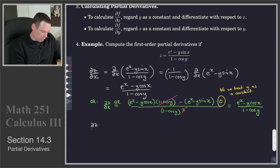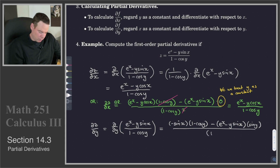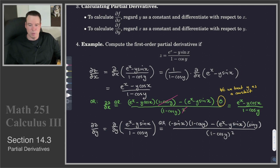For the derivative with respect to y, we use the quotient rule since both top and bottom are functions of y. The quotient rule gives: derivative of the top (negative sin x) times the bottom (1 minus cos y), minus the top (e to the x minus y sin x) times the derivative of the bottom (sin of y), all over the bottom squared. That gives us the partial derivative with respect to y.